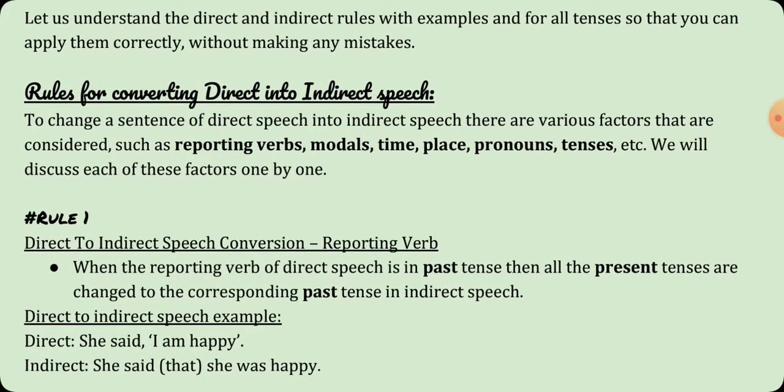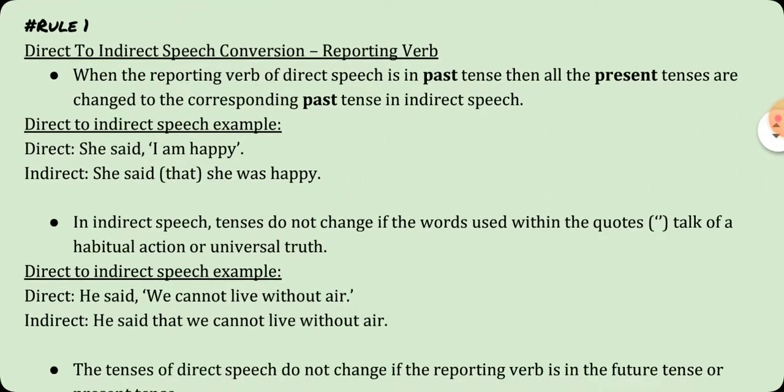Now let us understand the direct and indirect rules with examples for all tenses so that you can apply them correctly without making any mistakes. First, let us consider the rules for converting direct into indirect speech. To change a sentence of direct speech into indirect speech, there are various factors such as reporting verbs, modals, time, place, pronouns, tenses, etc. The first rule is about the reporting verb. When the reporting verb of direct speech is in the past tense, all present tenses are changed to the corresponding past tense in indirect speech. For example, 'She said I am happy' becomes 'she said that she was happy.'